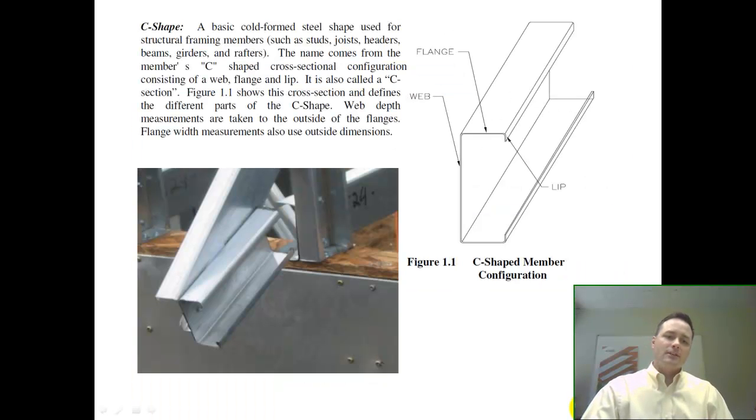Back-to-back C trusses are made from C-shaped cold-formed steel members, where the web part of the C-shape is in a back-to-back configuration for the truss cords and webs, and they are screwed from the web side.